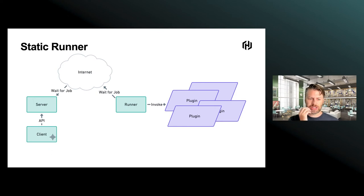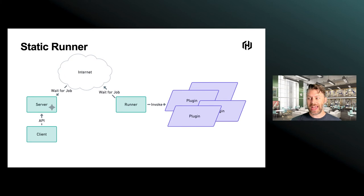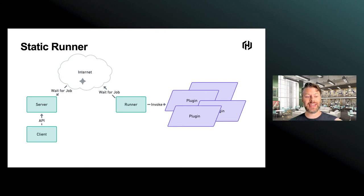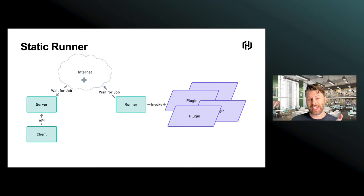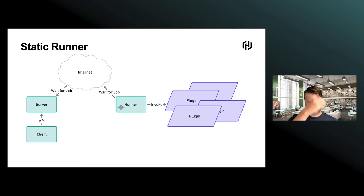So your request goes up to the server, and the runner has been waiting for any job information. The server then returns to that waiting runner. We've shown the internet here because that's really what the design is — the server and the runner can be very disconnected from each other. The server needs to be available to be connected to, but it could be anywhere, and then the job gets pulled by the runner and handed off to the plugins.